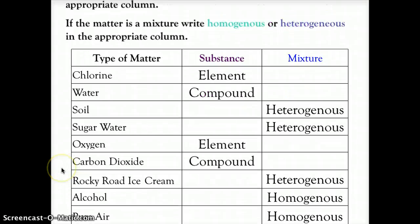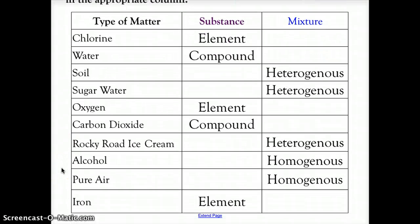So for each of these, let's take a look. For chlorine, that is a substance and it is a single element. Water, as we said before, is a compound - a combination of two elements, hydrogen and oxygen.